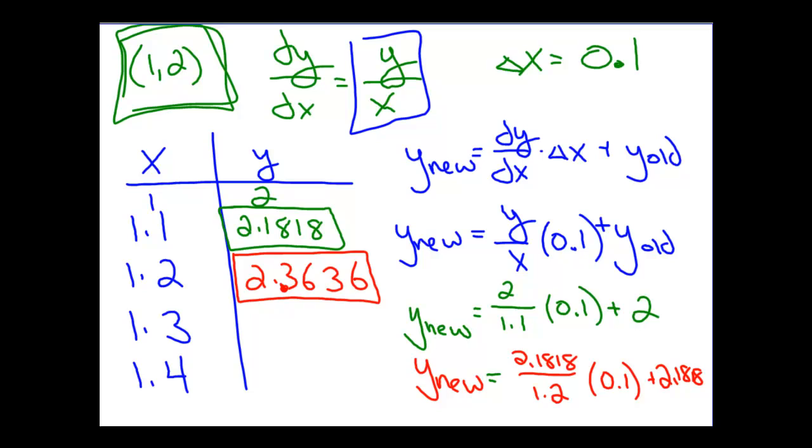Why don't you take a moment and practice for yourself determining what the value for 1.3 will be. Okay, well hopefully you have gone through and taken a moment to look at these particular problems. You should have found that the y value for x equals 1.3 is approximately 2.5454, and for 1.4 the approximate value is 2.7272.